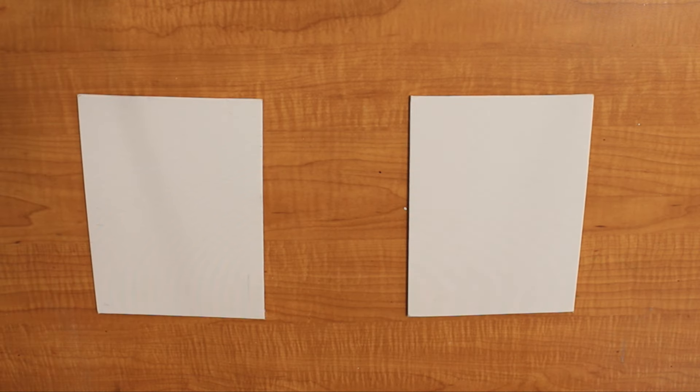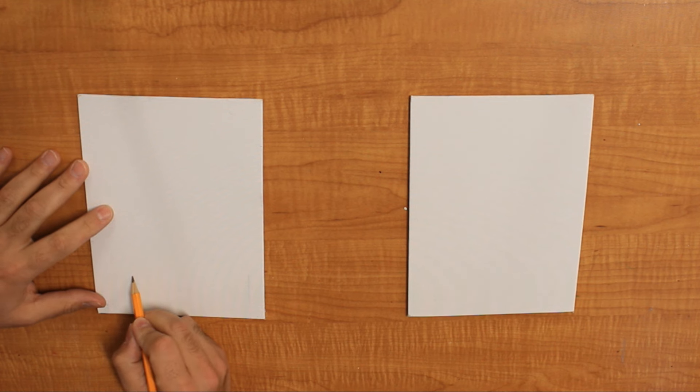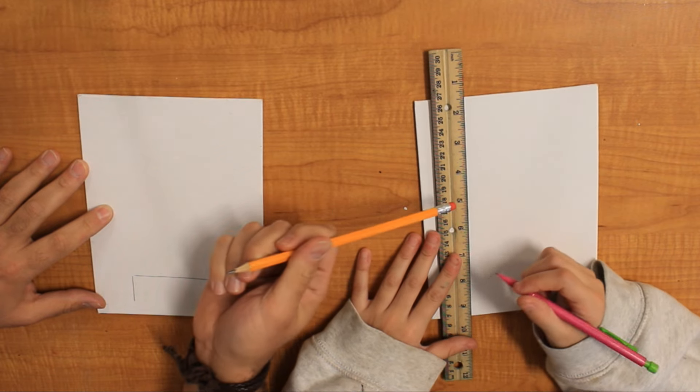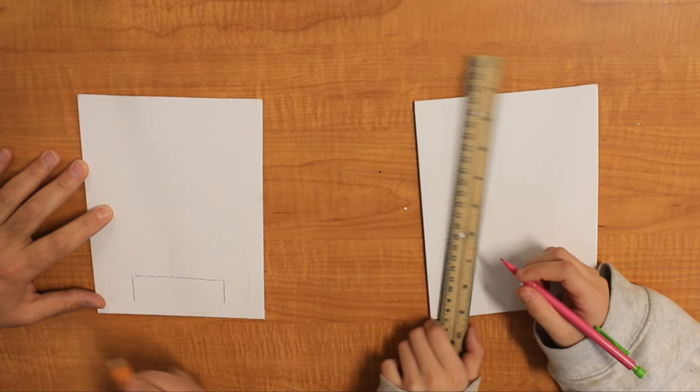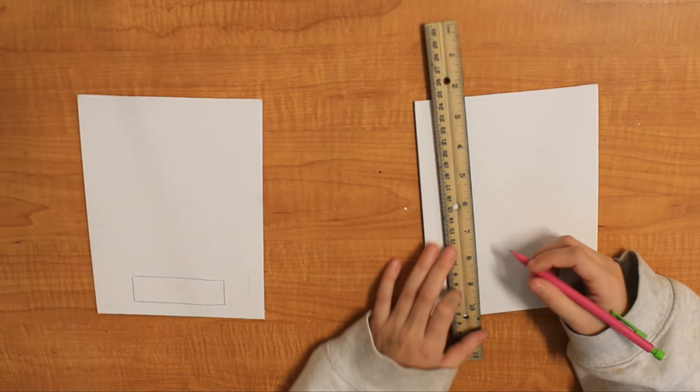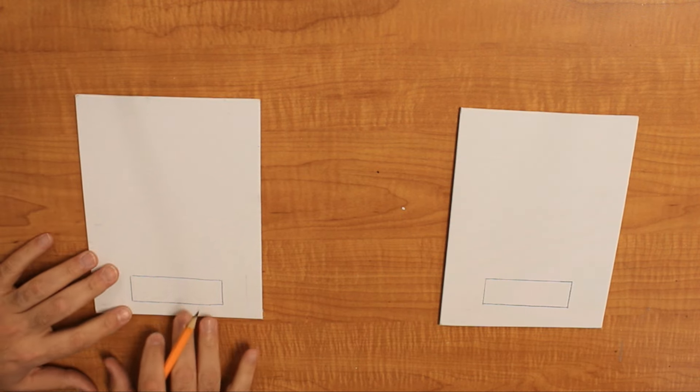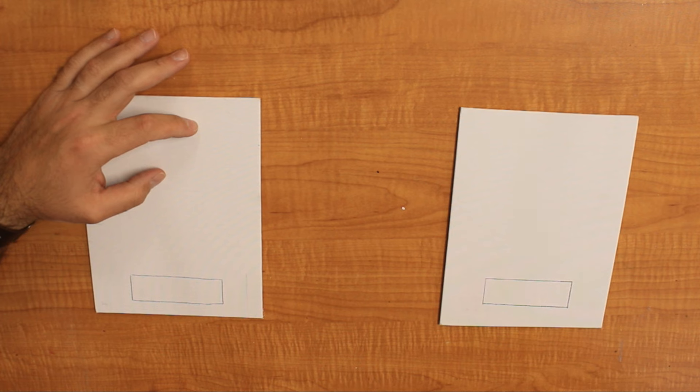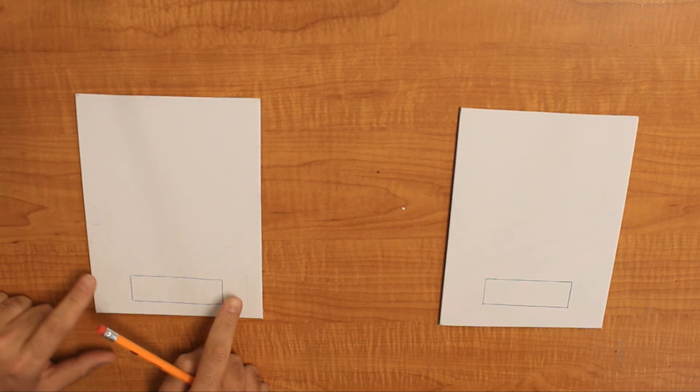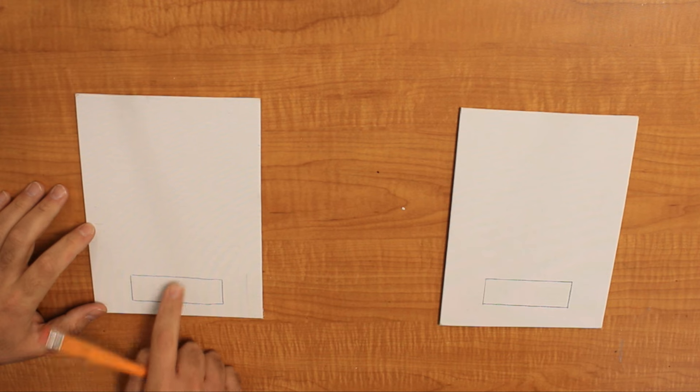We're going to start off by creating our Santa popping out of a present by creating the present first on the bottom. We're going to make a rectangle on the bottom, make it wide enough because Santa's kind of big, right? Elisa's using a ruler to make her box, but if you feel confident and want to freehand like me, you can do that as well.